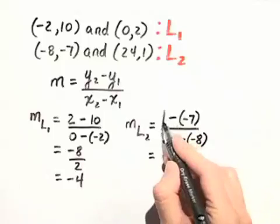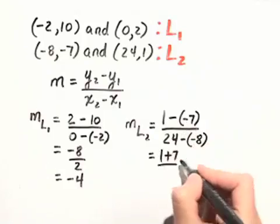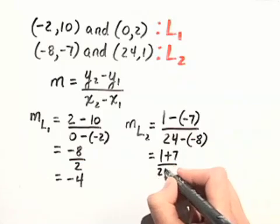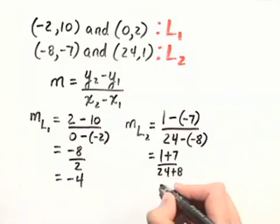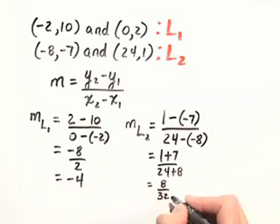So we have 1 minus negative 7, or 1 plus 7, over 24 minus negative 8, or 24 plus 8. That's 8 over 32, which simplifies to 1 fourth.